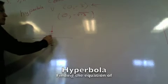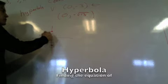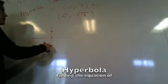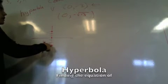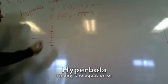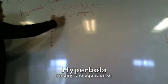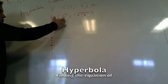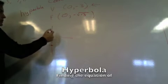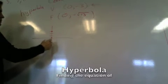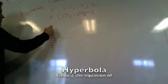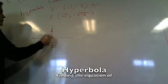So the center is here. Those are the vertices. This is the foci — one of the foci is at (0, -√13), which is a little over 3. So there and there — those are the coordinates for your foci.